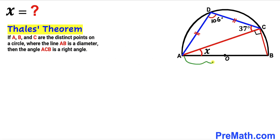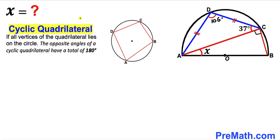This is because AB is the diameter and points A, B, and C all lie on the same circle. Now let's recall the cyclic quadrilateral: if all vertices of a quadrilateral lie on the same circle, such a quadrilateral is called a cyclic quadrilateral. As seen in the diagram, all points A, B, C, and D lie on the same circle.